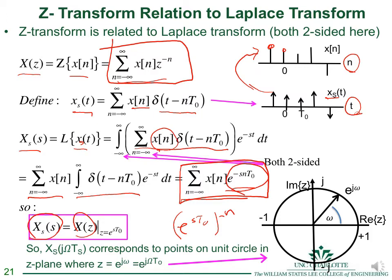When s = jΩ, the term e^(sT_s) corresponds to points on the unit circle, since e^(jθ) is a point on the unit circle. The angle would be ΩT_0, showing that discrete-time frequency corresponds to the frequency points e^(jΩT_0). This shows the relationship between discrete-time frequency and continuous-time frequency.